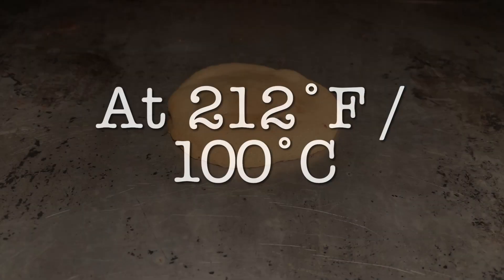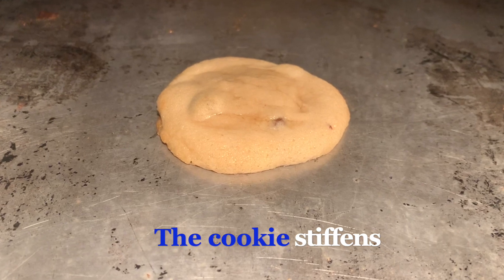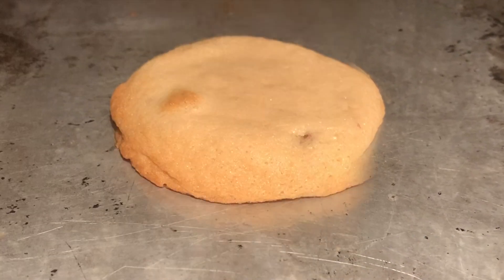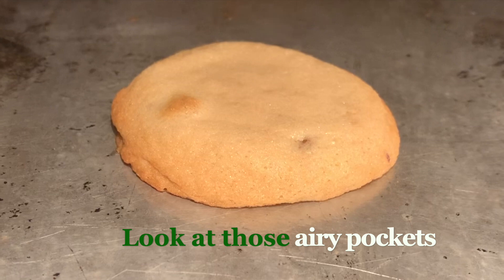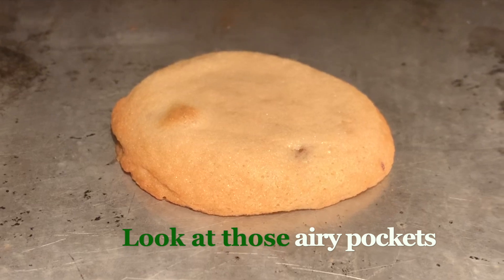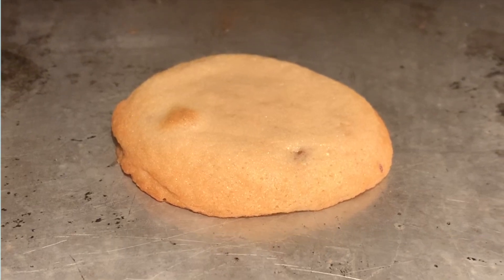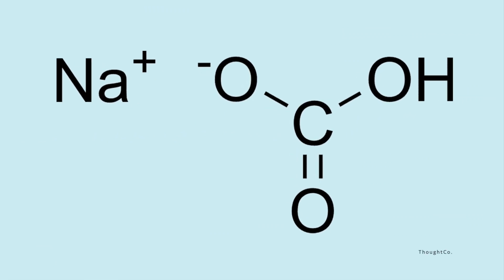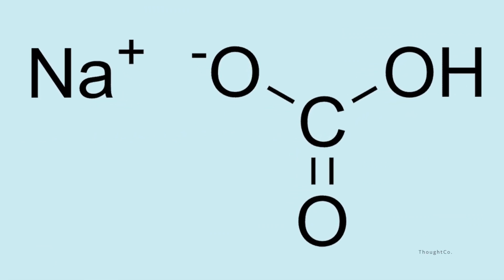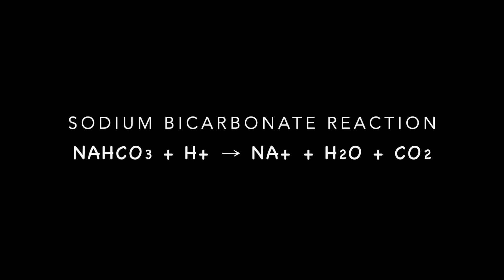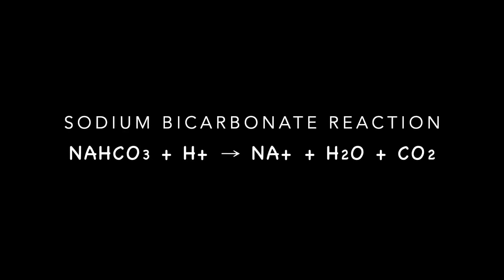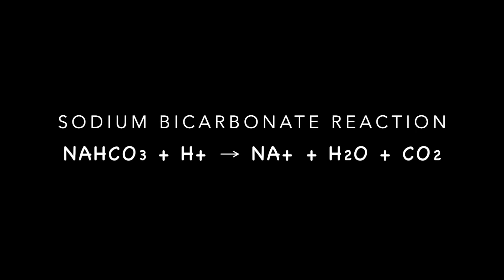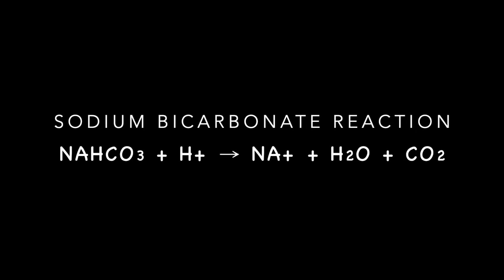At 212 degrees, the cookies begin to stiffen. The water that was bubbling inside evaporates, leaving behind airy pockets that make the cookies light and flaky. Helping this along is the leavening agent sodium bicarbonate, commonly known as baking soda. The baking soda reacts with the acids in the dough, creating carbon dioxide gas, thus generating more airy pockets in your cookies.